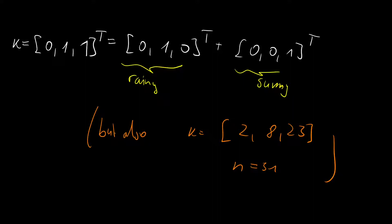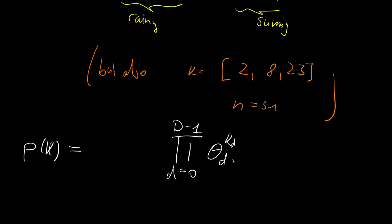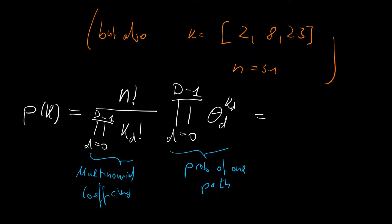We can make this formal and define the probability mass function of the multinomial. The probability of one sequence is the product from d=0 to D-1 of the probability entry d raised to the power k_d — we multiply the d-th entry of the probability vector k_d times. For our 31-day example this gives: P(cloudy)² times P(rainy)⁸ times P(sunny)²³. Then we multiply by the multinomial coefficient — n factorial over the product from d=0 to D-1 of k_d factorial — which counts the number of paths. Together these fully define the multinomial.